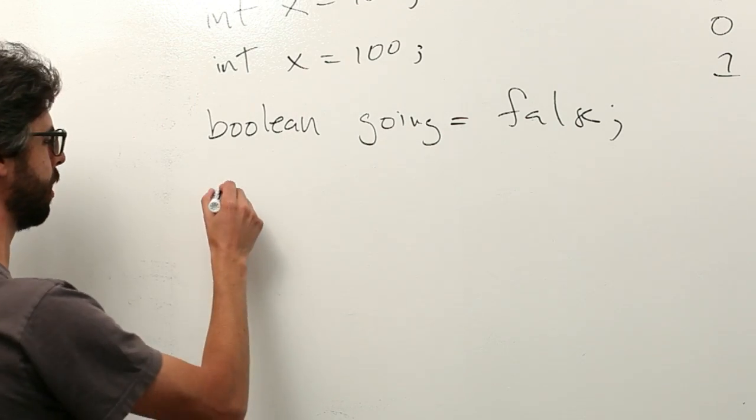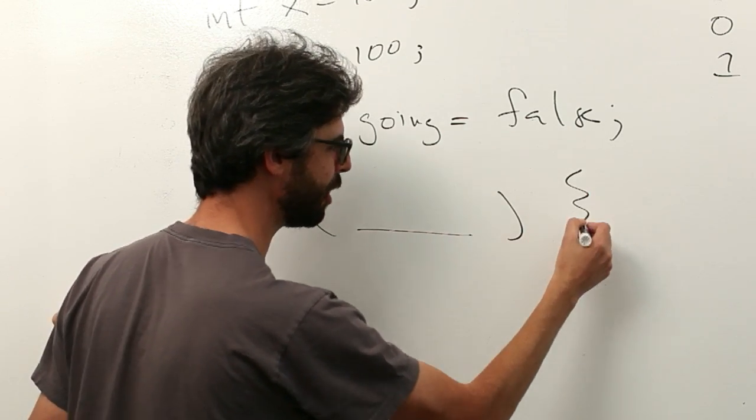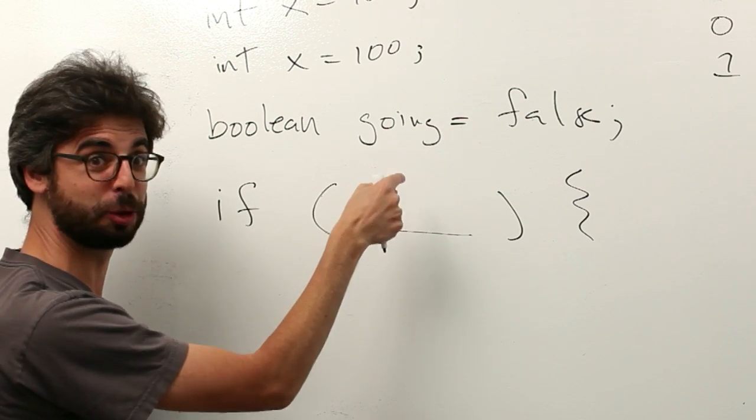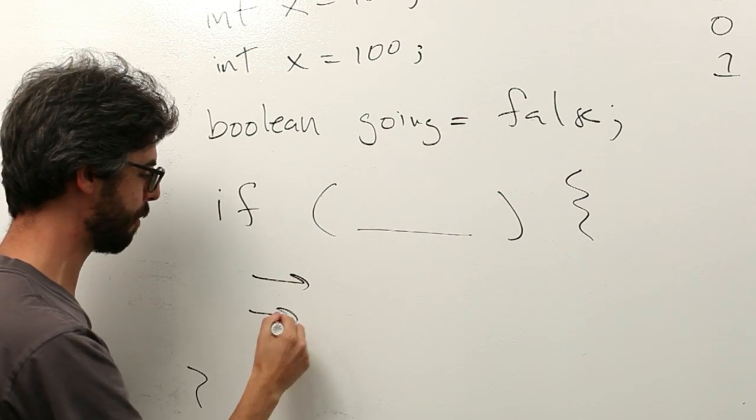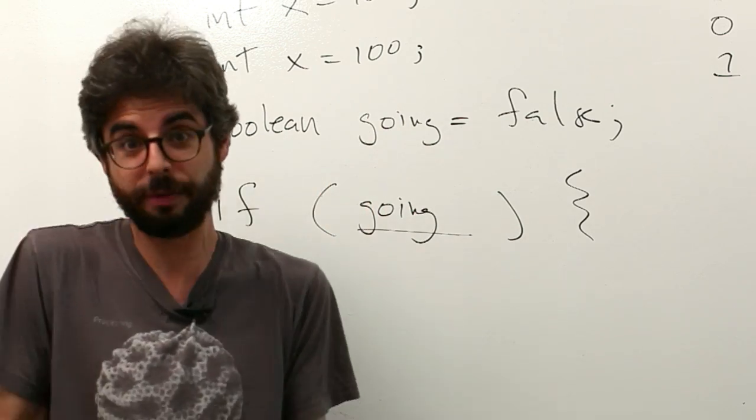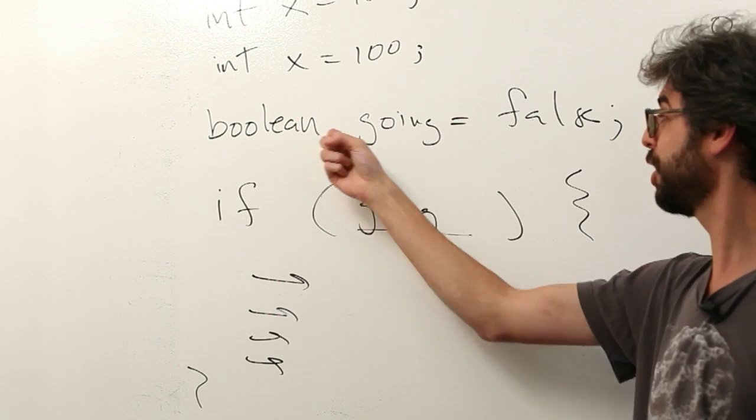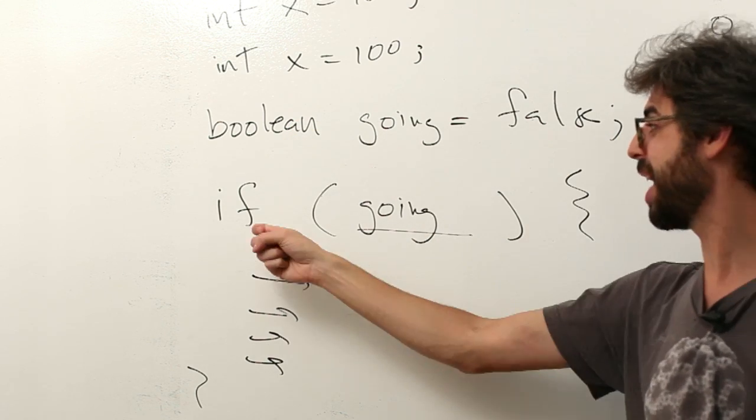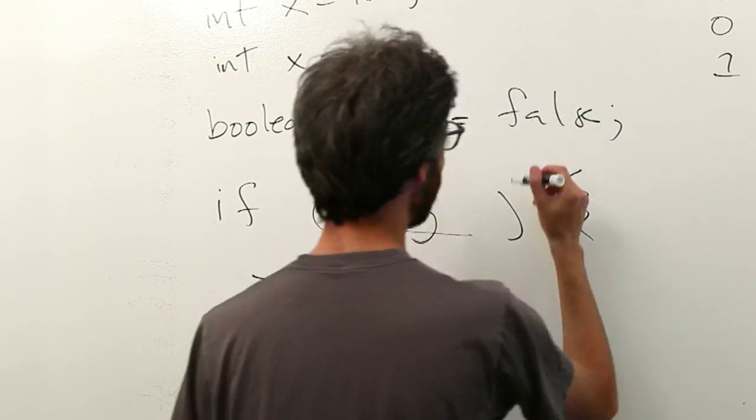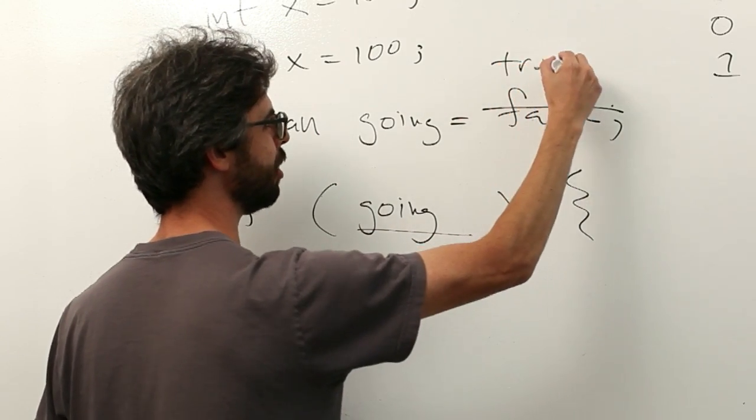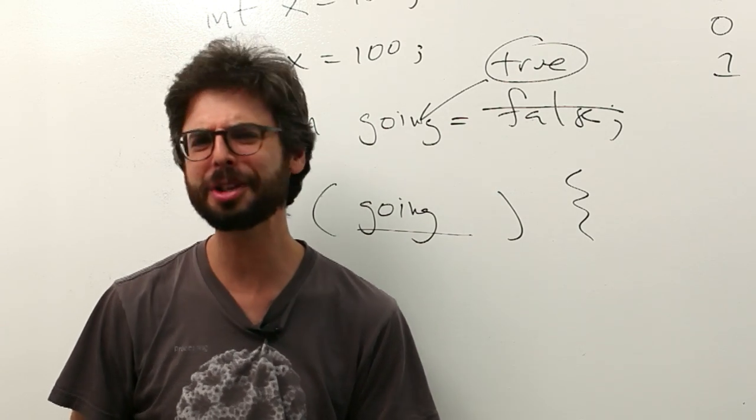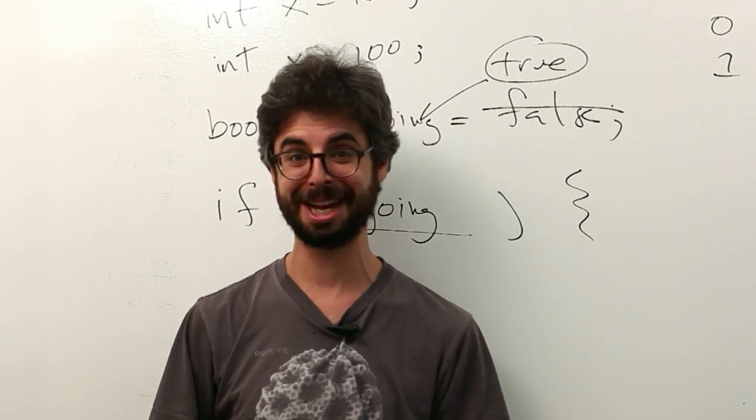And if you remember, a conditional statement is an expression. If some expression evaluates to true, execute some code. Guess what? A Boolean variable evaluates to true or false. This Boolean going is false. So if going, that means we're not going to execute this code because going is false. But if I change its value to true, then this code will become executed. So let's look at a way that we might use this in an example.